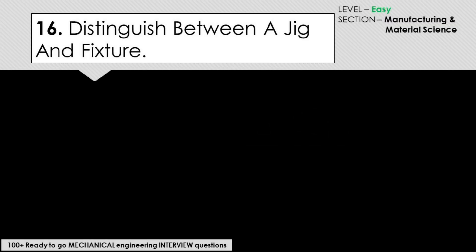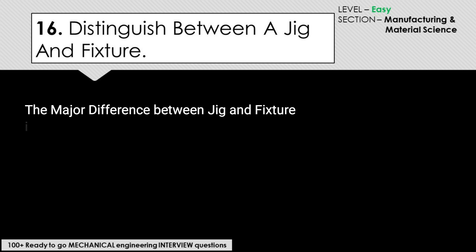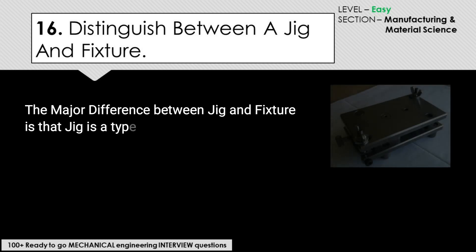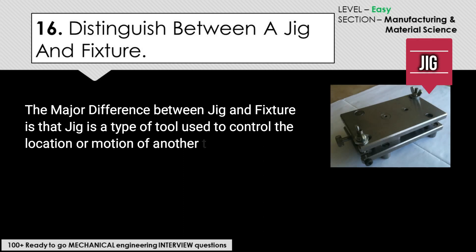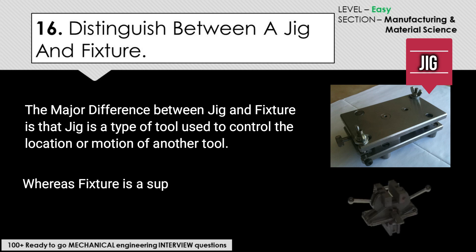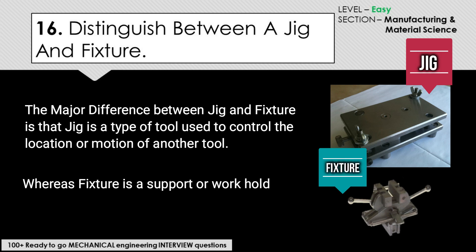Distinguish between a jig and a fixture. The major difference between jig and fixture is that a jig is a type of tool used to control the location or motion of another tool, whereas a fixture is a support or work-holding device which is used to hold work in place.